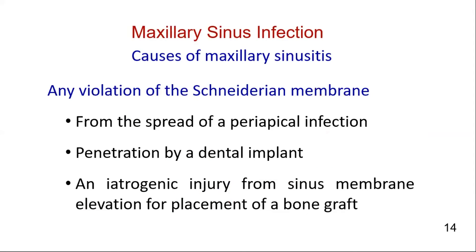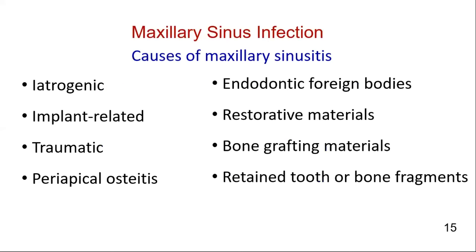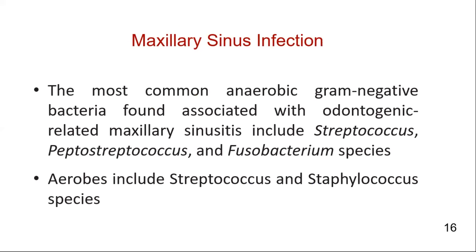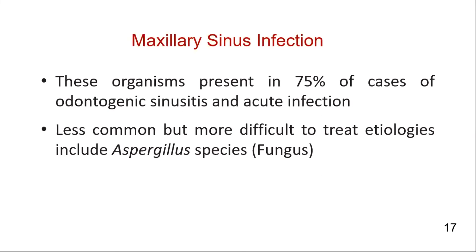Any violation of the sinus membrane may precipitate maxillary sinusitis, either from the spread of periapical infection, penetration by a dental implant, or iatrogenic injury from sinus membrane elevation for placement of a bone graft. The most common anaerobic gram-negative bacteria associated with odontogenic-related maxillary sinusitis include Streptococcus, Peptostreptococcus, and Fusobacterium species. Aerobes include Streptococcus and Staphylococcus species. These organisms are present in 75% of cases of odontogenic sinusitis and acute infection.